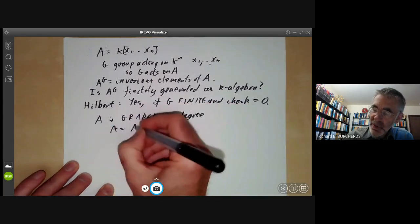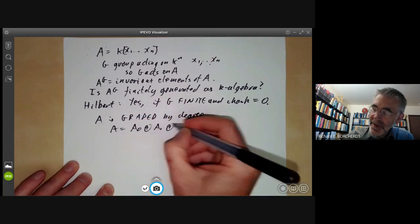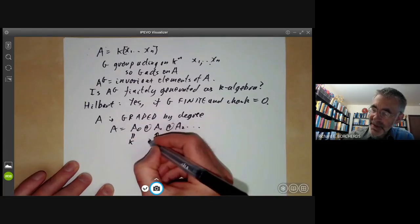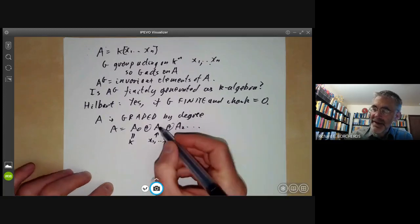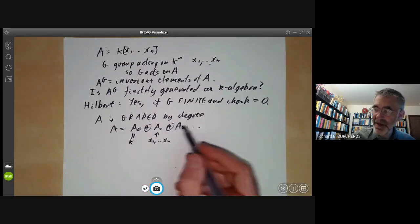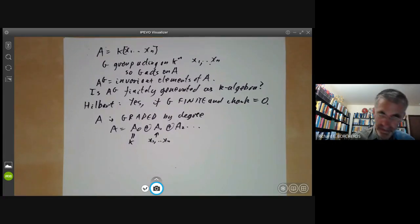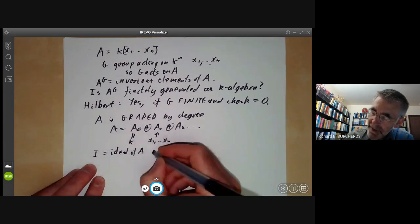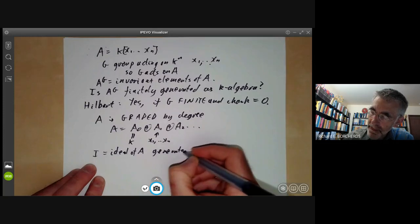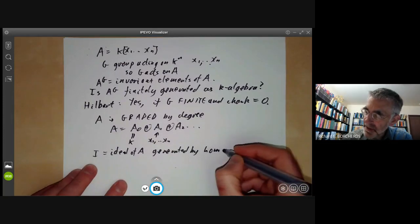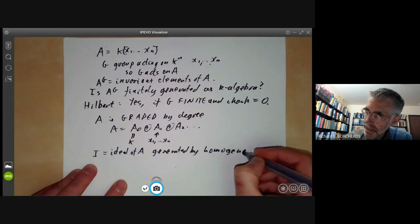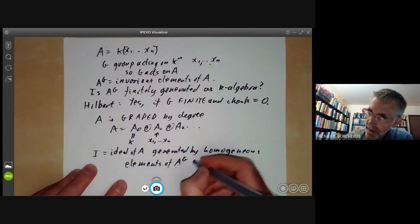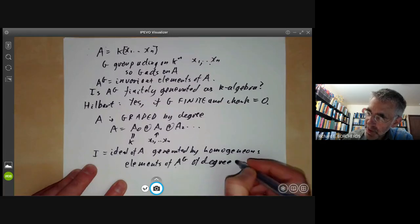So A is equal to A0 plus A1 plus A2 and so on. Well, A0 is just the field k and A1 contains elements x1 up to xn and is an n-dimensional vector space and so on. So this is really just the usual grading of a polynomial ring. And we let I be the ideal of A generated by the homogeneous elements of A^G of degree greater than zero.